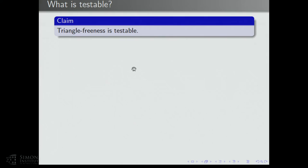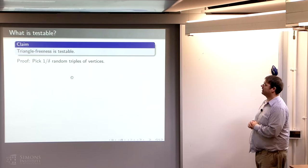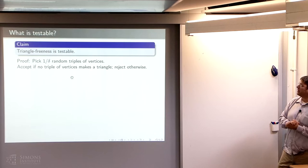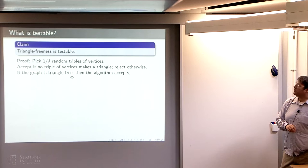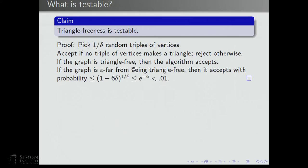As a nice application of the triangle removal lemma, you can show that triangle-freeness is testable. You want to distinguish between graphs that are triangle-free from graphs where you have to delete at least epsilon n-squared edges to make it triangle-free. The proof: pick 1 over delta random triples of vertices, where delta is from the triangle removal lemma. The algorithm accepts if no triple of vertices we query makes a triangle; otherwise we reject. If your input graph was triangle-free, none of these triples will make a triangle, and your algorithm will accept.